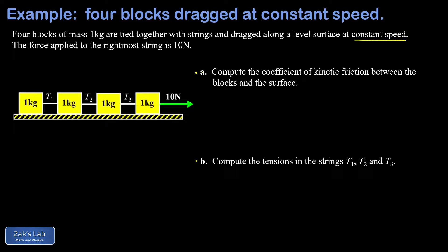In part b we want to get all the unknown tensions in the strings connecting the blocks. To answer part a, if that were the only question, there's a really quick shortcut I'll illustrate first. But part b forces us into a more detailed analysis that can answer part a as well. So we'll look at the shortcut solution for part a and then do the full-blown problem to get part b.